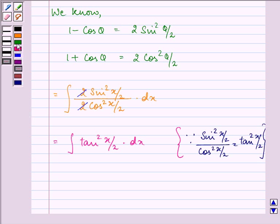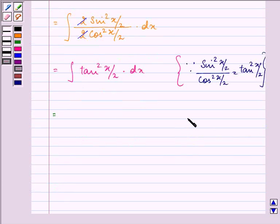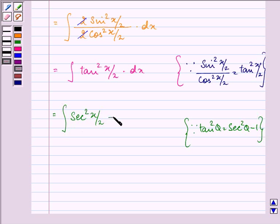So we have further equal to, now the integral of tan square theta is equal to secant square x by 2 minus 1. Secant square theta is equal to secant square theta minus 1 into dx.